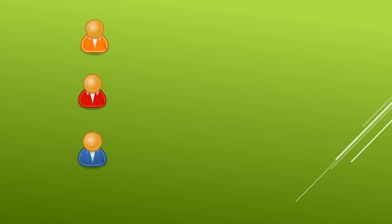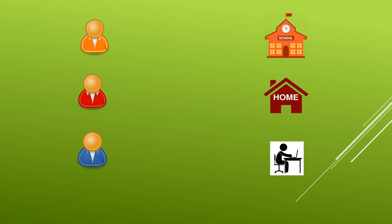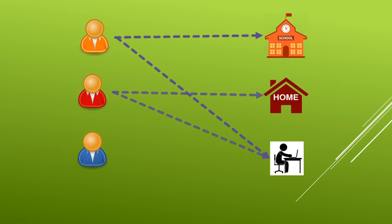Let's say that we have three different people we're tracking in our database and we also want to track the addresses for these individuals — places like their school, their home, and their office. It may be that two or more individuals go to the same office, or one individual has just one home address. There are many people that go to one of these addresses, but there are also many addresses that a person might go to. This is what's called a many-to-many relationship — many people go to many places.